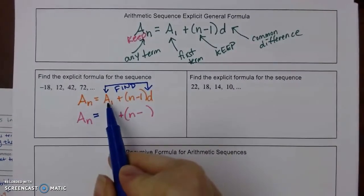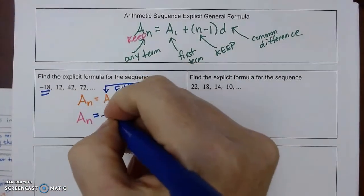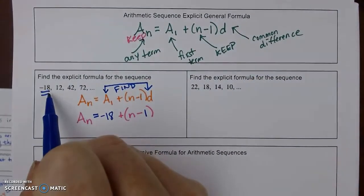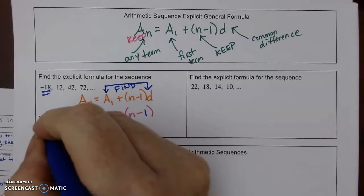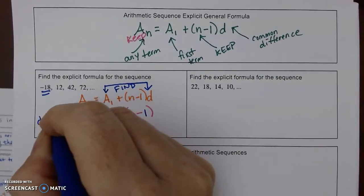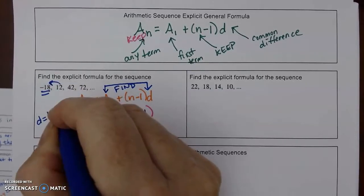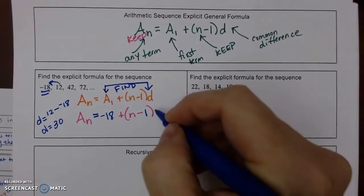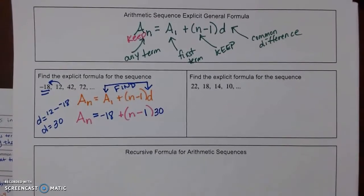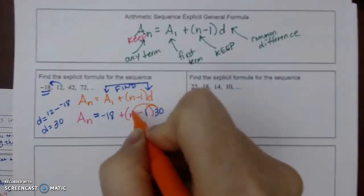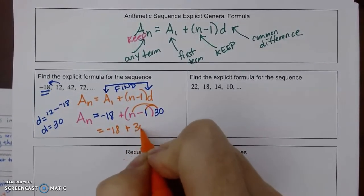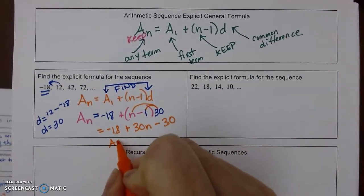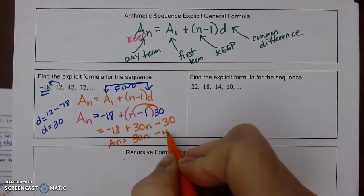For the first example, a sub 1 is -18 and it's always (n - 1). The common difference: take any term minus the previous term, giving d = 30. Substituting: a sub n = -18 + 30(n - 1). Distribute the 30: -18 + 30n - 30. Combining integers gives the final formula: a sub n = 30n - 48.